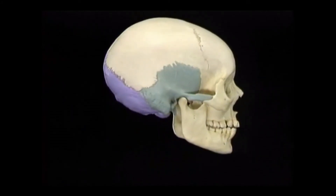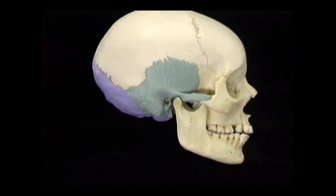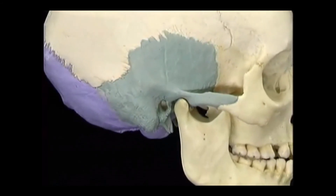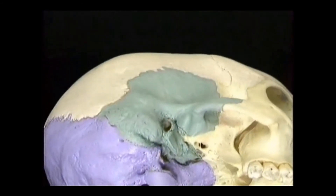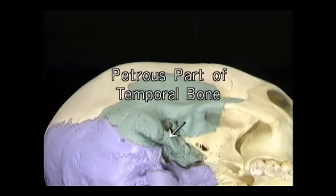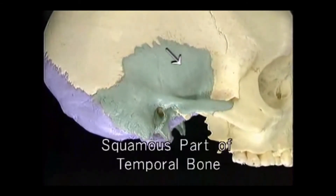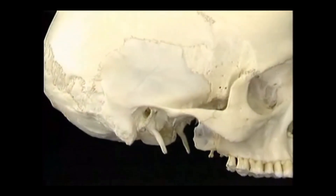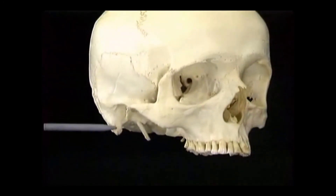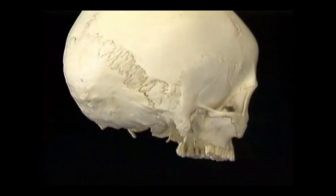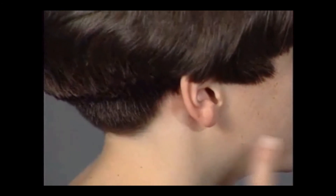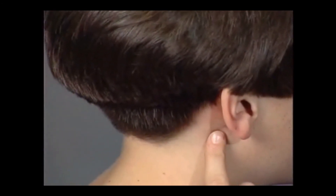Now let's take a look at the temporal bone. It's quite a complicated bone. To see its full extent, we'll again remove the mandible. The temporal bone goes from here on the outside to here underneath. This is the petrous part of the temporal bone, and this is the squamous part. A prominent feature of the temporal bone is this large projection, the mastoid process. As we'll see, it's the origin of some of the muscles that move the head, including the sternocleidomastoid. It's easy to feel the mastoid process here, behind and below the ear. We'll also take a first look at some of its other important features, which we'll appreciate in later sections of these two tapes.